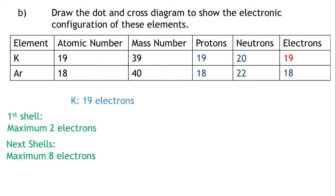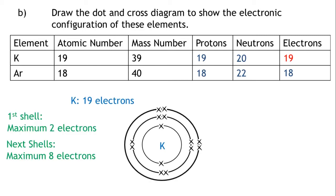Potassium has 19 electrons: 2 in the first shell, 8 in the second shell, 8 in the third shell, and 1 in the fourth shell.